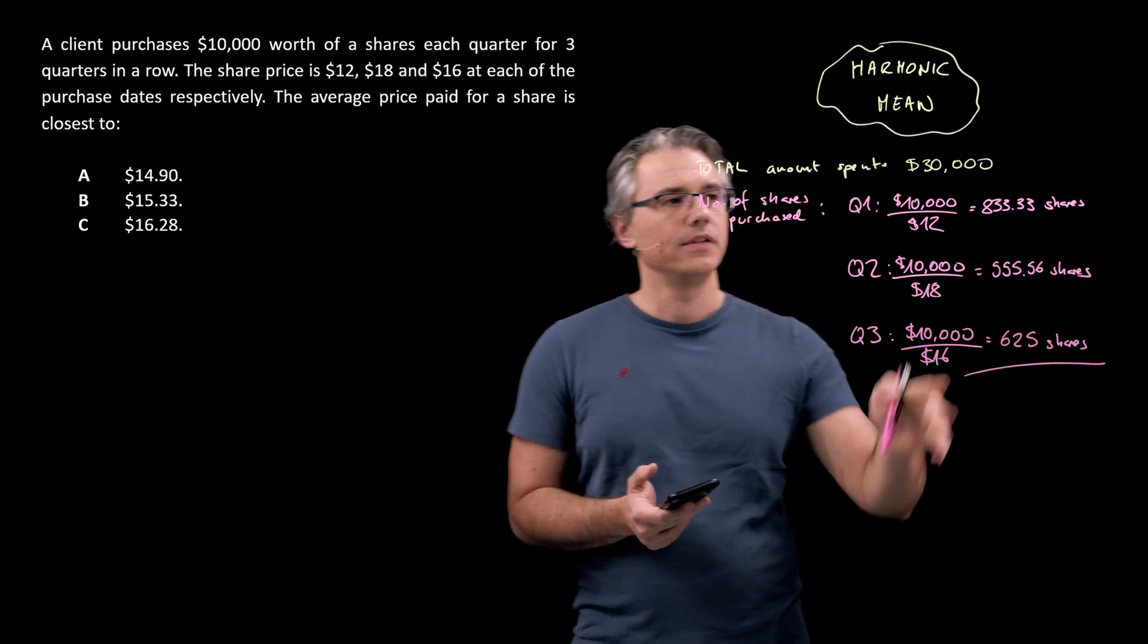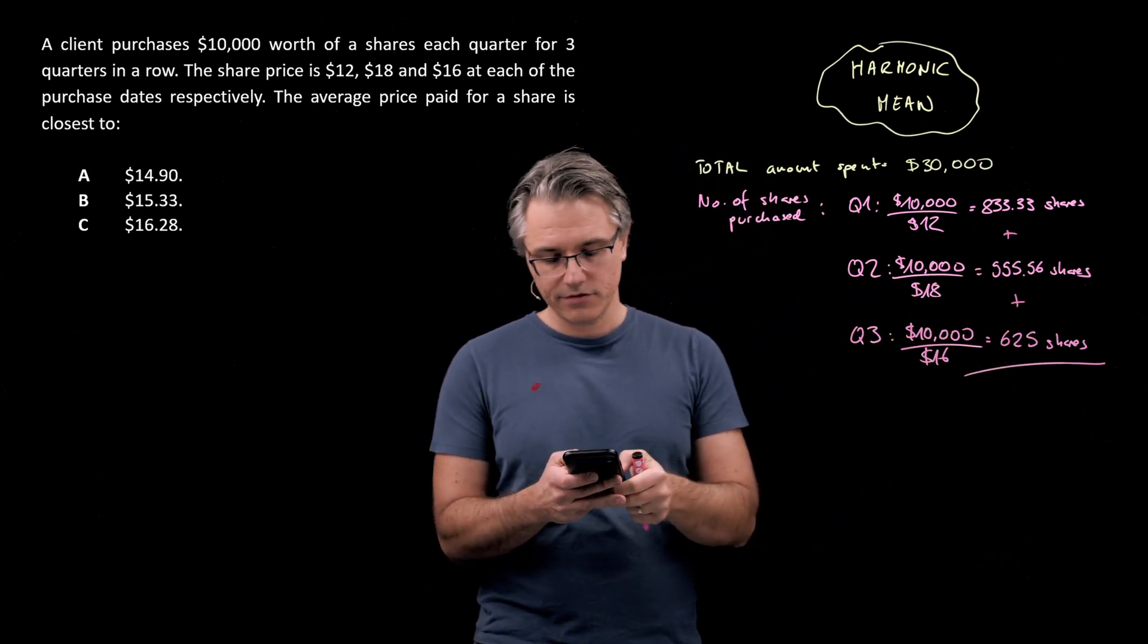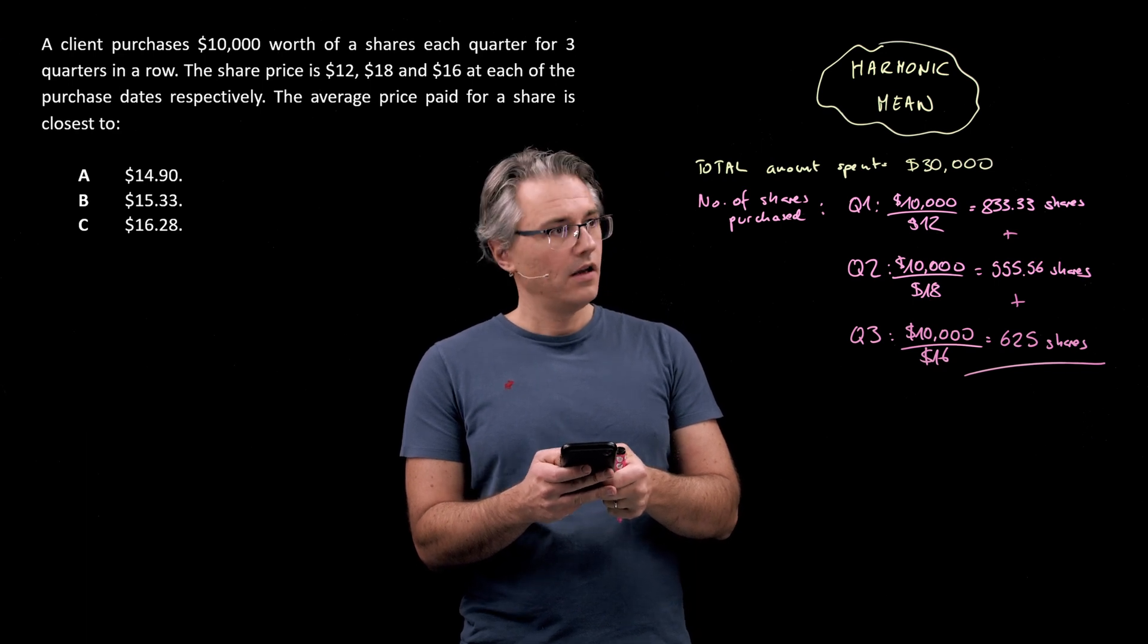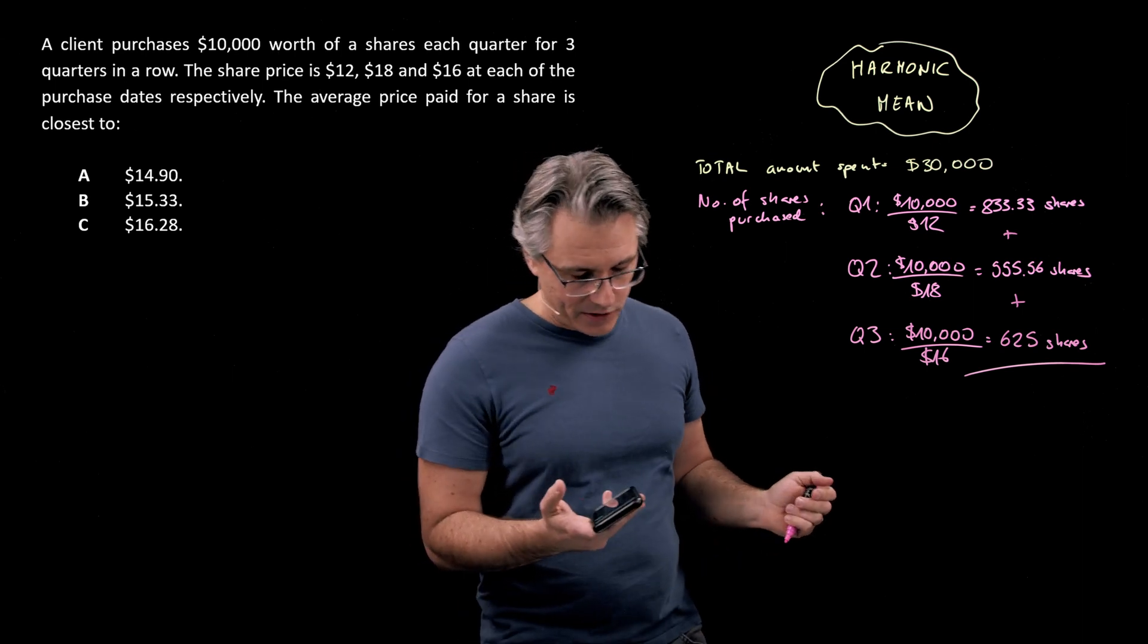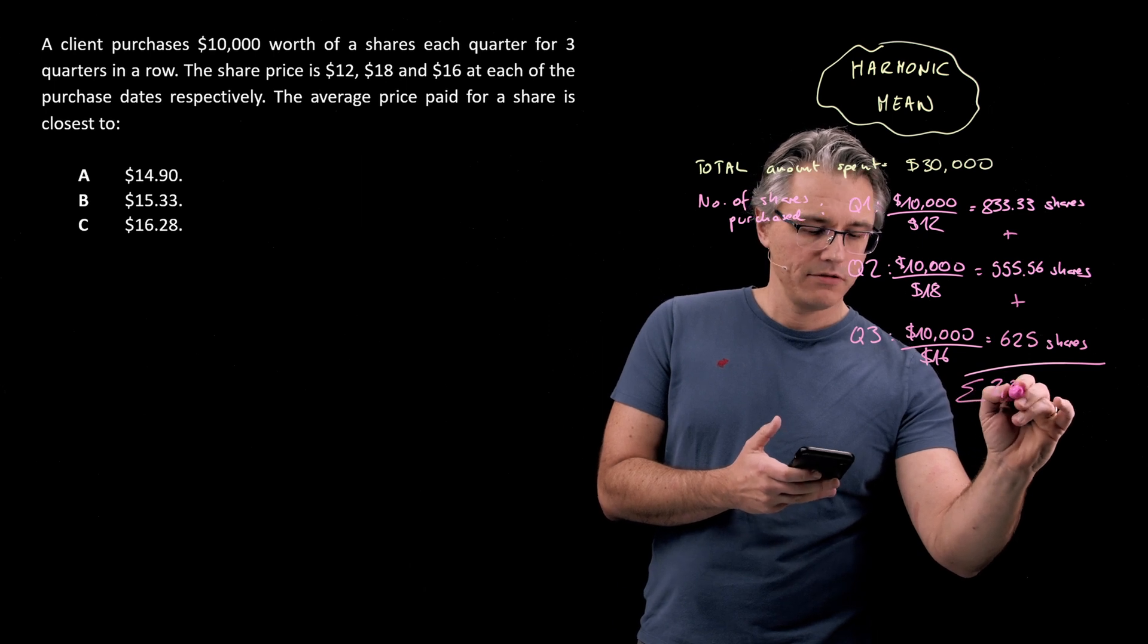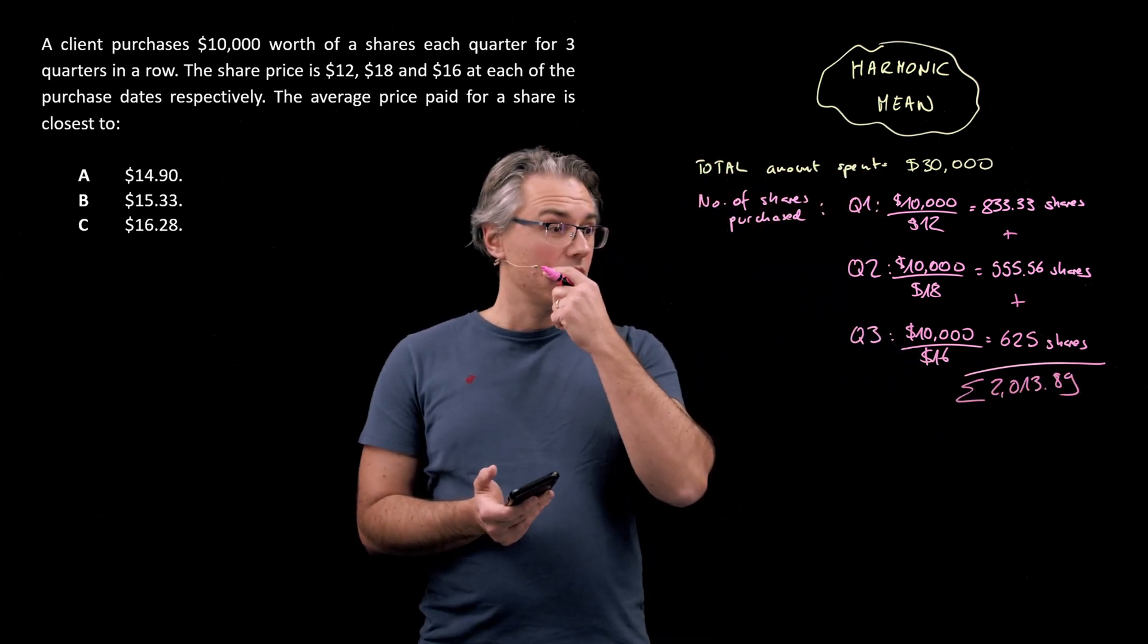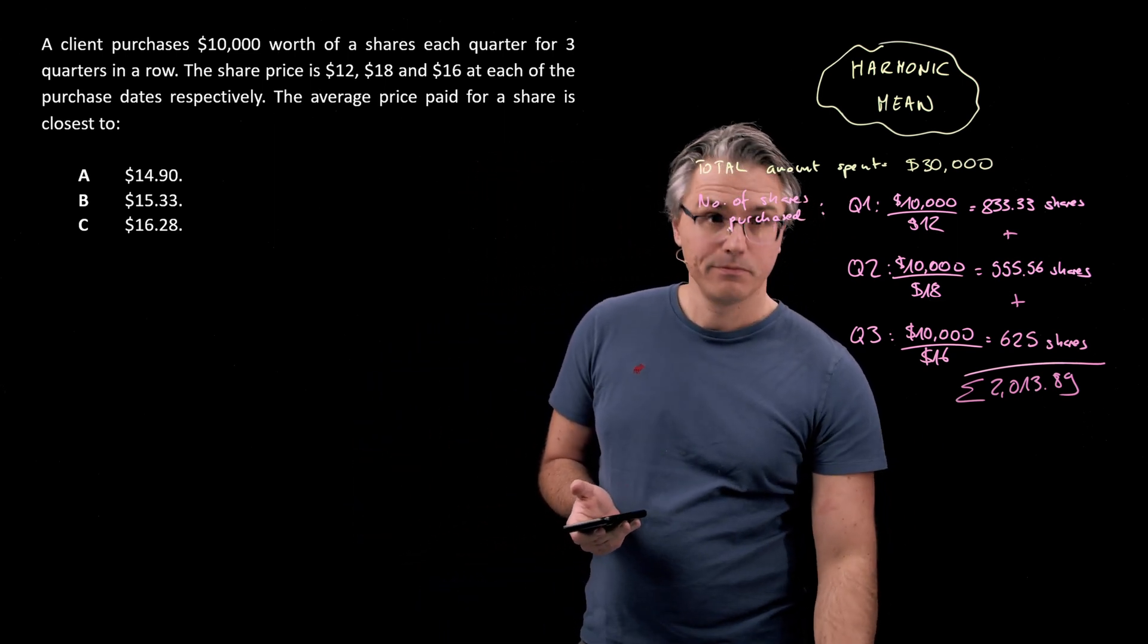So let's add up these numbers of shares: 625, 555, and 833.33. My calculator is telling me that the total number of shares bought would be 2013.89. Now, from this, I can compute the average price paid for a share.